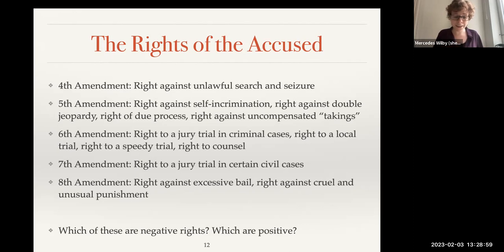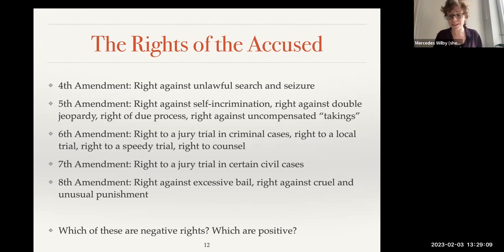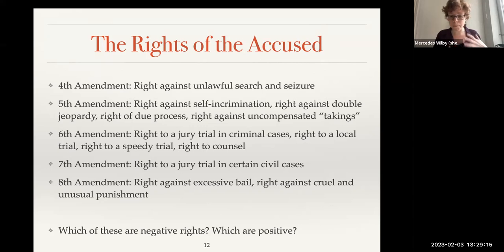One of the problems with the Intolerable Acts and Britain's other responses to our rebellion was that they removed our right to a trial by a jury of our peers. If we in the colonies were accused of a crime against the crown, we would be shipped back to England for trial, which violated this right. It also violated a right to any sort of speedy or local trial. This became a big point of contention and one of the things listed in the Declaration of Independence as a grievance against England.